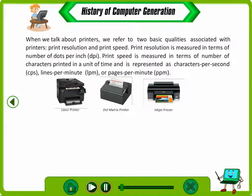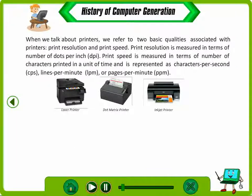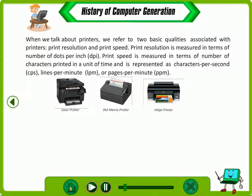When we talk about printers, we refer to two basic qualities: print resolution and print speed. Print resolution is measured in terms of number of dots per inch (DPI). Print speed is measured in terms of number of characters printed in a unit of time, represented as characters per second (CPS), lines per minute, or pages per minute.